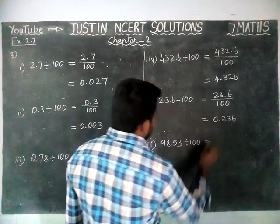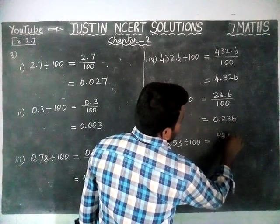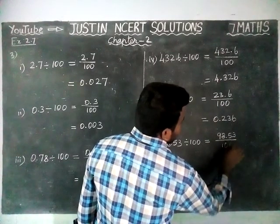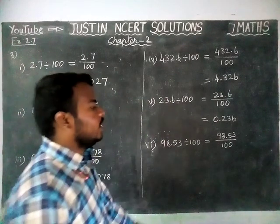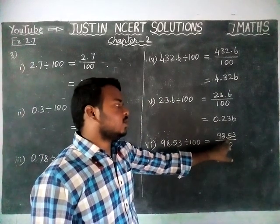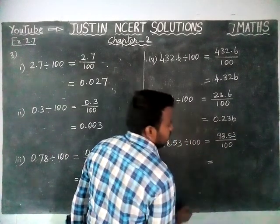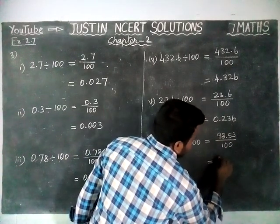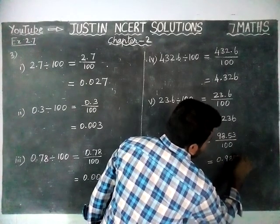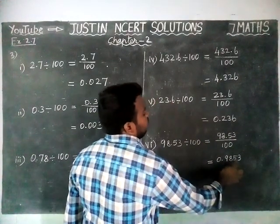Sixth question: 98.53 divided by 100. Here also we have two zeros in the denominator, so we have to move two steps to the left-hand side. The answer is 0.9853.